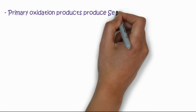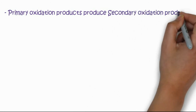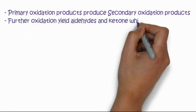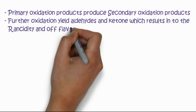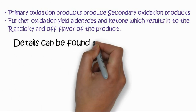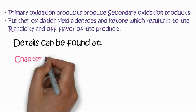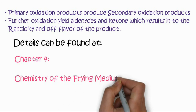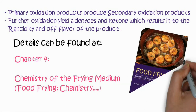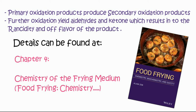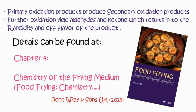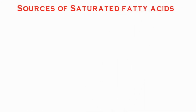These are usually called primary oxidation products, which upon further oxidation form secondary oxidation products. Further oxidation yields aldehydes and ketones, which results in rancidity of the product. You can see details in the book chapter number four, titled 'Chemistry of Frying Medium,' from the book 'Food Frying: Chemistry, Biochemistry and Safety,' published by John Wiley & Sons, UK, in 2019.